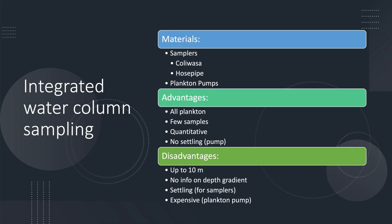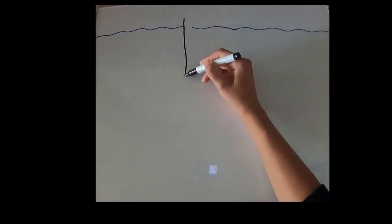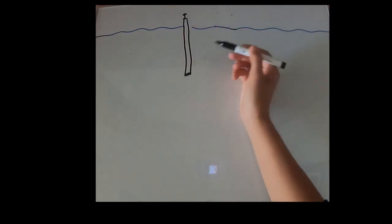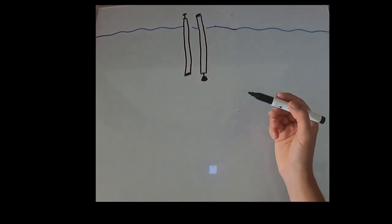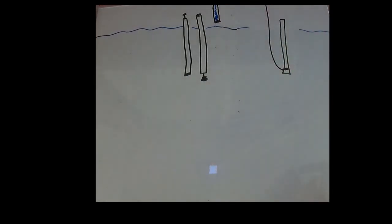Integrated water column sampling is another common sampling method. Equipment used include Kolwassa samplers, hose pipe samplers, and plankton pumps. Kolwassa samplers and hose pipe samplers are like long tubes that scientists lower into the water. They trap a vertical profile of the water in a given location. The water collected can be mixed and then placed into sampling bottles as a representation of the plankton throughout that entire area.